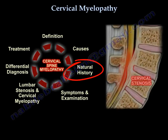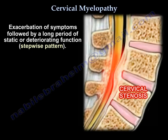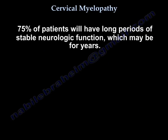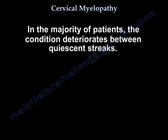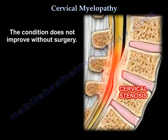The natural history of cervical spondylotic myelopathy tends to be progressive and gets worse in a step-like deterioration fashion, with periods of stable symptoms followed by exacerbation, then long periods of static or deteriorating function. About 75% of patients will have long periods of stable neurologic function. In the majority, the condition deteriorates between quiescent streaks, and about 20% show a slow steady progression. The condition does not improve without surgery.